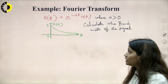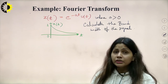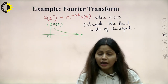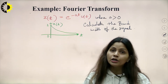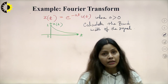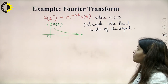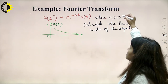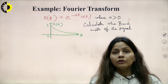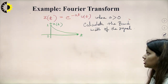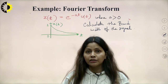Coming to another example: one function is given as e^(−at) · u(t), where u(t) = 1 for t ≥ 0 and u(t) = 0 for t < 0. Here, a is greater than 0. Since it is a negative exponential function and u(t) is defined only for the positive side of t, this function is exponentially decreasing.